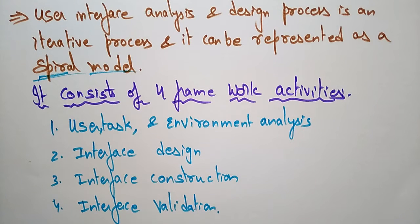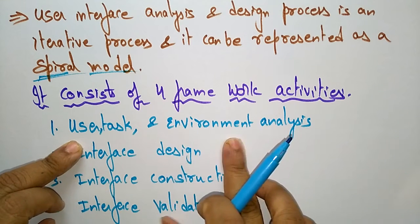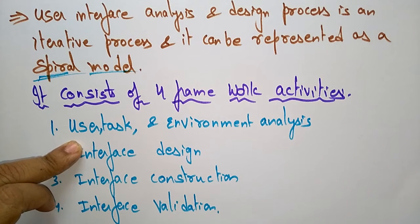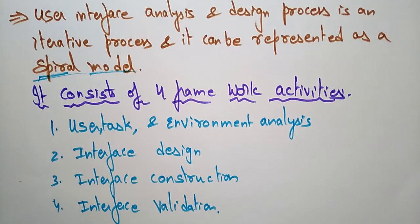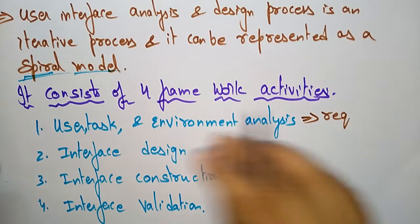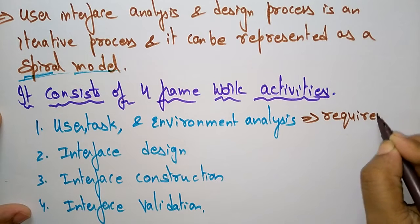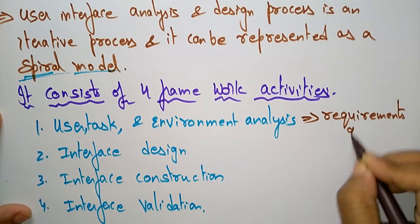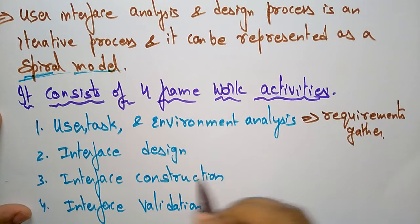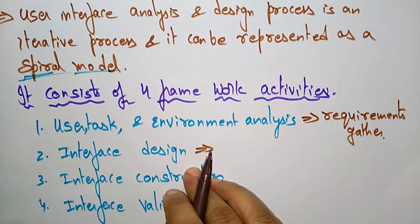If you want to analyze and design the user interface, you have to follow these four framework activities. First, you gather the user tasks and whatever tasks the user provides, along with environment and interface analysis — this is where you gather the requirements. In this first framework activity, we are gathering requirements.